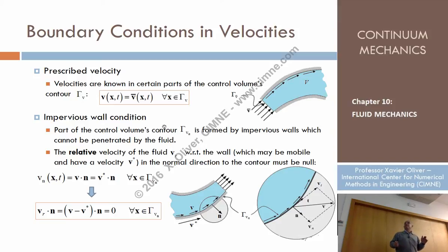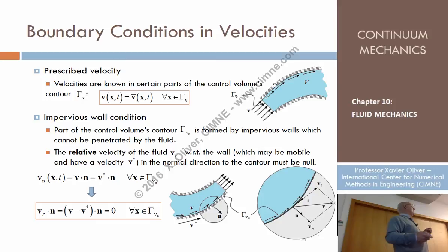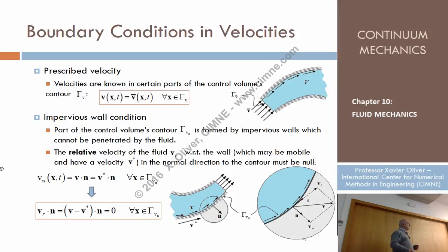More generally, if this impervious boundary — the wall — moves at some velocity V-star, then the impervious condition is that the relative velocity of the particles with respect to the boundary is tangent to the boundary. So if N is the normal, the condition is (V minus V_boundary) dot N = 0 at all points where this impervious condition applies. We already applied this in chapter five when solving pipe problems.